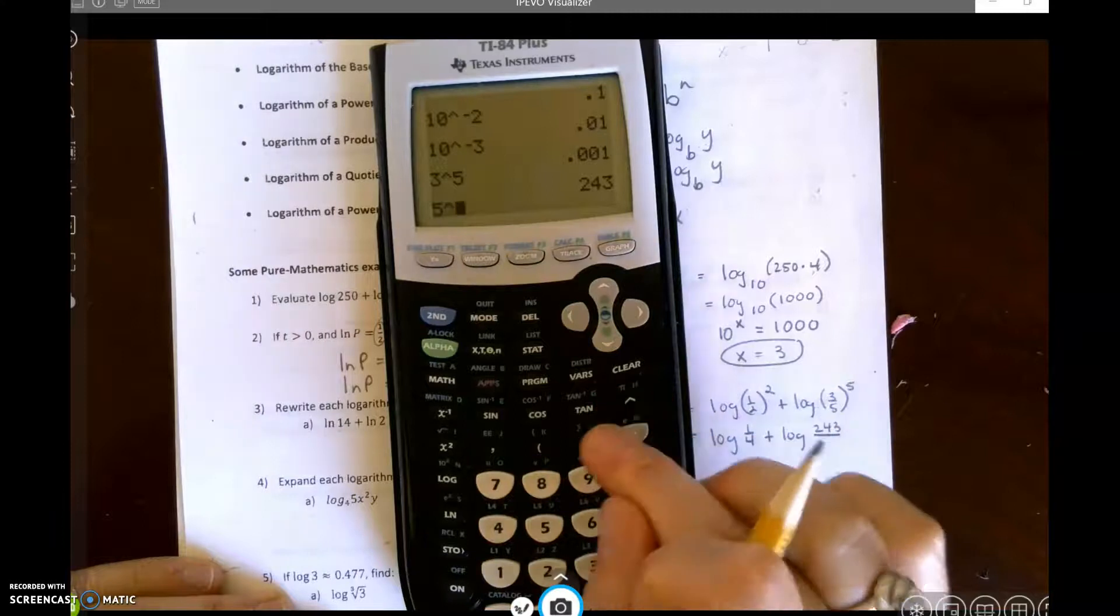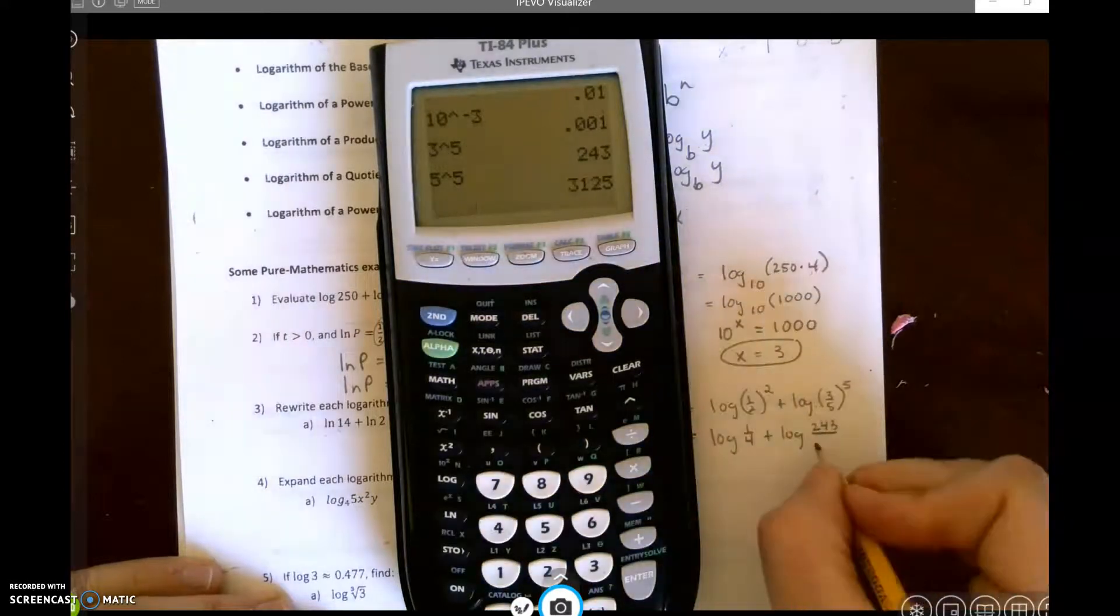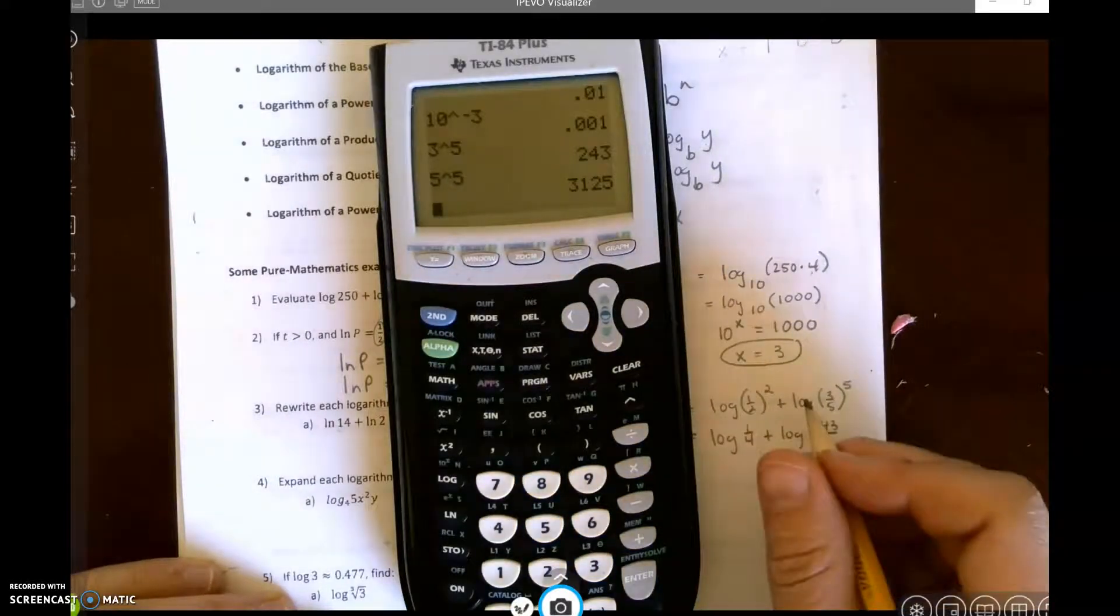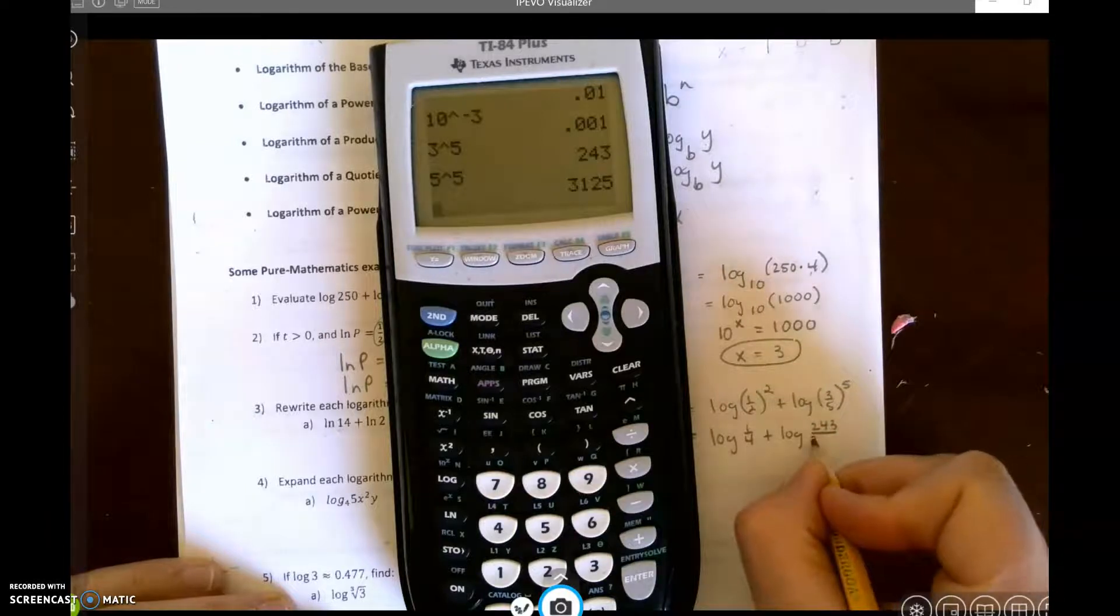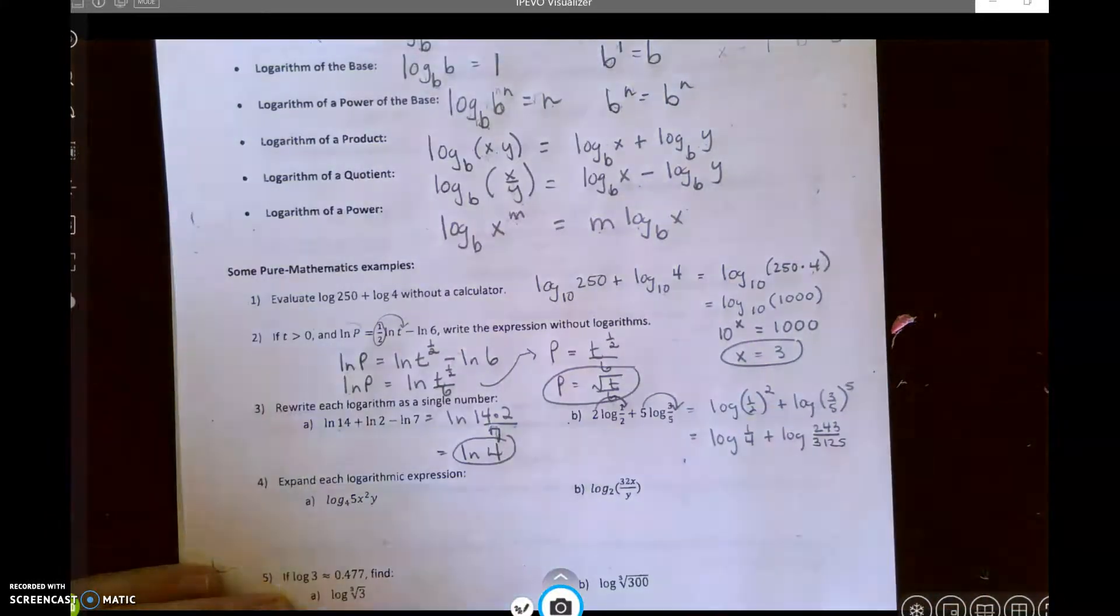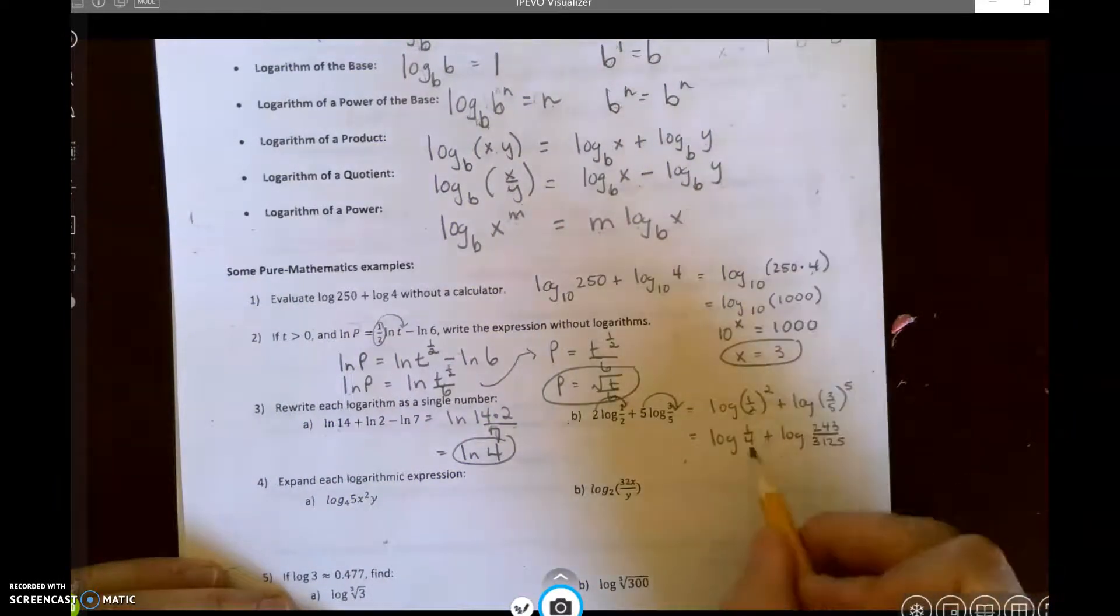Three to the fifth power, that would be 243. Five to the fifth power. Now that I've taken care of my exponents, this addition means multiplication.